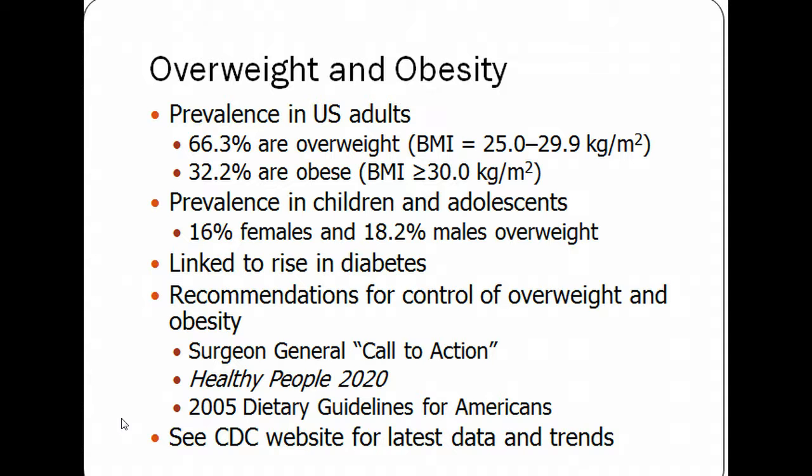Obesity is associated with the rise in diabetes, not just in the U.S. but also globally. We're trying to get people to reduce their weight to a BMI level of 25. You've probably all seen the CDC slides with maps showing different states and how obesity has increased since the late 80s through now. There are now no states with under 20% obese. Even Colorado, which has been the best state, has higher levels of obesity than desired.